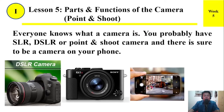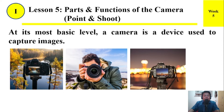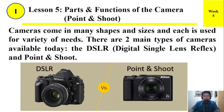Everyone knows what a camera is. You probably have an SLR, DSLR, or Point and Shoot Camera, and there is sure to be a camera on your phone. At its most basic level, a camera is a device used to capture images. Cameras come in many shapes and sizes, and each is used for a variety of needs. There are two main types of cameras available today: the DSLR, or Digital Single Lens Reflex, and the Point and Shoot Camera.